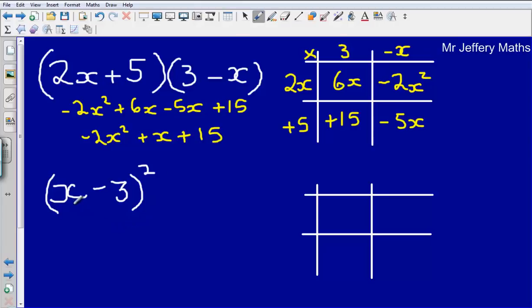Next one here, we've got x minus 3 in brackets, and this has been squared. Now when we square something, that means we're multiplying the same thing by itself. So we can say this is exactly the same as x minus 3 in brackets times x minus 3 again in brackets.